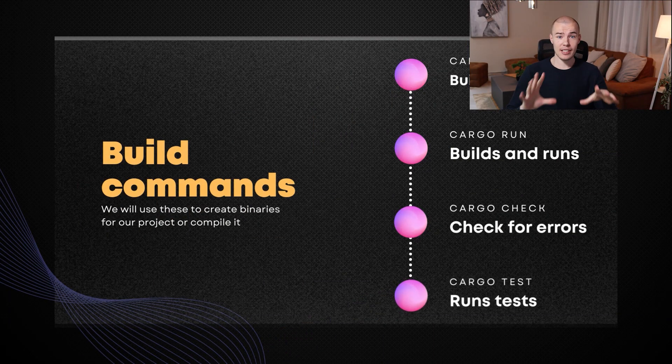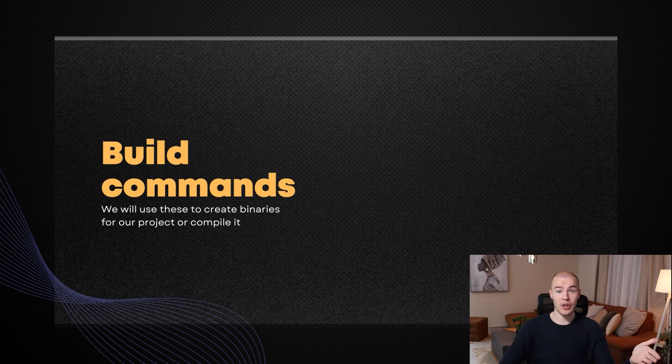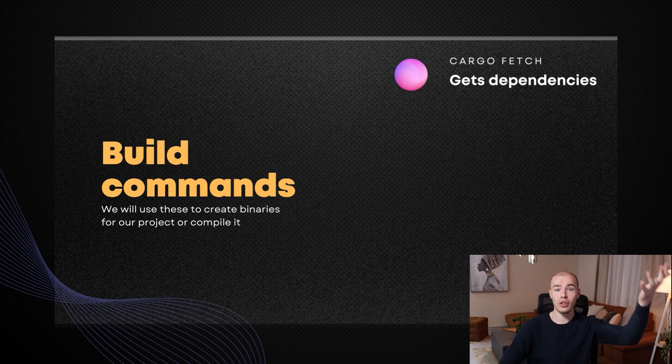If you remember our story from the previous video about compilers, the cargo check command is just going to do the validation of our code and check it for both syntactical and semantical errors. Then we have the cargo test command, which is used for running our tests. Rust has amazing support for testing because it only has a single attribute which you add to your function, and it will know that it's a test and will not build that code into our executables. But when you run cargo test, it will run all the functions that have the test attribute. We also have the cargo fetch command, which is used to fetch all the dependencies specified in the cargo.toml file.